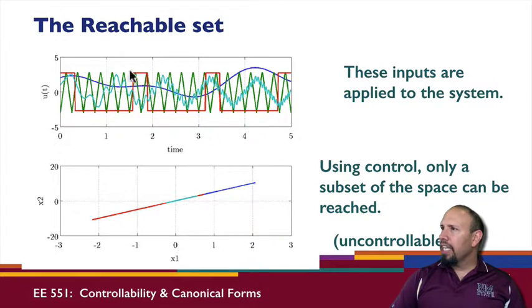Applying each of these signals to the system, these are the various responses that I get out. Notice that this is the phase plane. This is state x1, this is state x2. Notice that the state only moves in this direction. It only moves along that line. Even though I'm applying signals of different kinds, it still only causes me to move in this axis here.